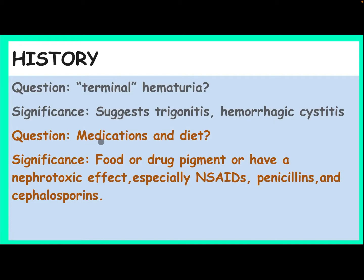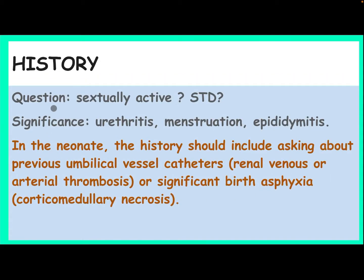Ask about medications and diet, as food or drug pigments can have a nephrotoxic effect, especially non-steroidal anti-inflammatory drugs, penicillin, and cephalosporins. Ask about sexual activity and STDs, which may suggest urethritis, menstruation, or epididymitis. In neonates, history should include asking about previous umbilical vessel catheterization, due to the risk of renal venous or arterial thrombosis, or significant birth asphyxia causing cortico-medullary necrosis.